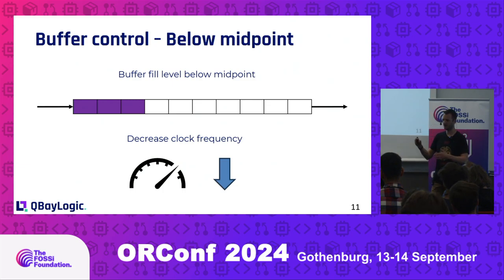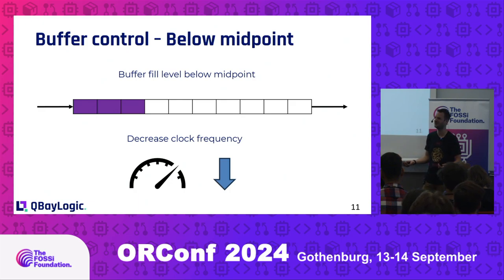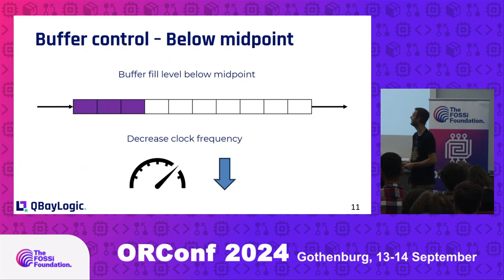Keeping this buffer at the midpoint is very important because on underflow, we're just reading garbage from the FIFO. And if the FIFO overflows, then we'll lose data. So it's important to stay within bounds.